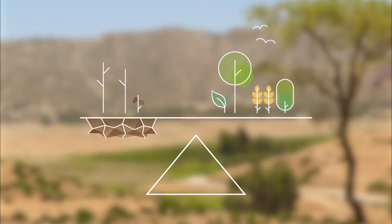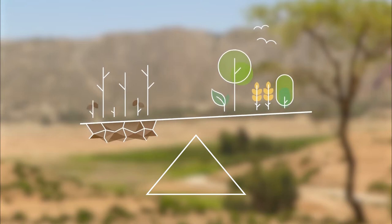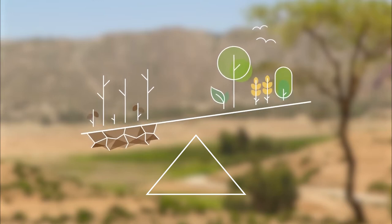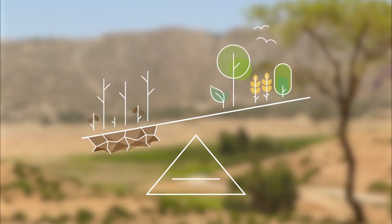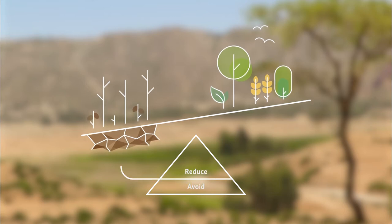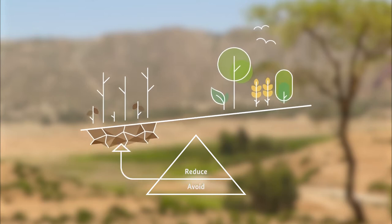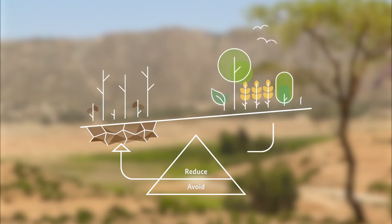When an intended land use has the potential to degrade the land, measures to avoid and reduce the anticipated degradation are planned and implemented. Partial degradation that cannot totally be avoided is then compensated by restoration and rehabilitation.